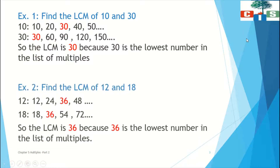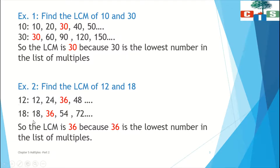Now we will see one more example: find the LCM of 12 and 18. We will first write all the multiples of 12, then all the multiples of 18. Multiples means the table of that number. In our last video I asked you to learn all the tables — I hope you have done it. Then we will find the lowest common number that appears in the multiples of both 12 and 18.